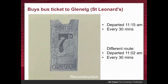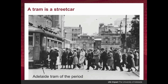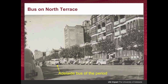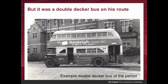Another possibility he didn't take was walking a little bit south to Victoria Square and taking a tram to the same destination as his bus. But he didn't do that — the bus was more convenient as it was straight across the road from the train station. This is what a bus looks like on North Terrace, the street he would have picked the bus up from. His bus on that particular route was a double-decker, not a single-decker.